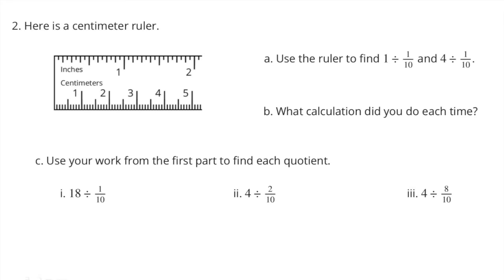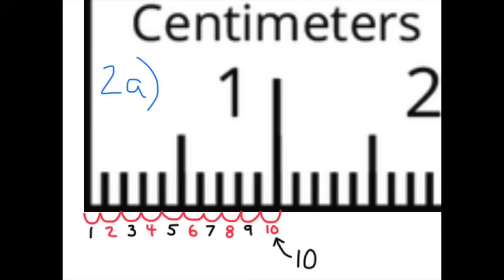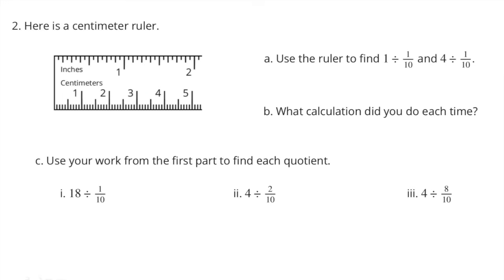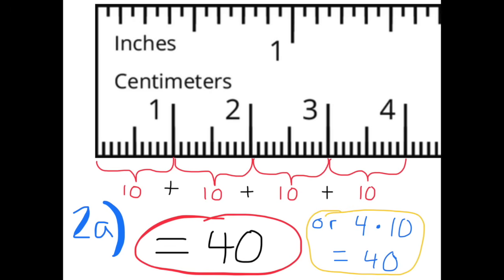Number 2. Here is a centimeter ruler. Part A: Use the ruler to find 1 divided by 1 tenth and 4 divided by 1 tenth. 1 divided by 1 tenth equals 10. There's 10 tenths in one whole. In 1, there's 10 groups of tenths. So in 4, it would be 4 times 10 groups of tenths. So 4 divided by 1 tenth is 40.